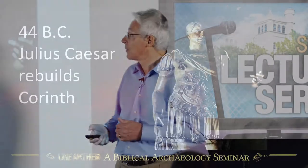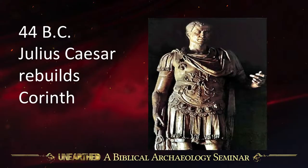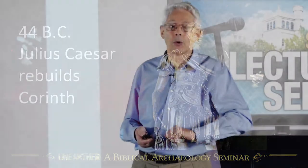Something had to be done, and the Romans wanted trade in their empire. So Julius Caesar, in 44 BC — just a few months before he was assassinated, because he died that year, so it was very early in the year — decided to rebuild Corinth. He gave the order, and though I doubt it was all done before he was killed, Corinth was rebuilt.